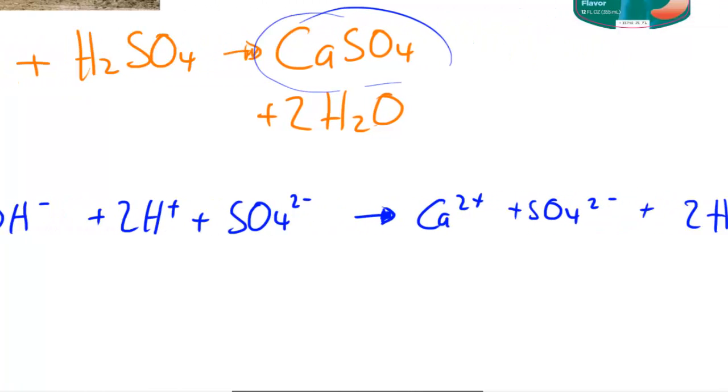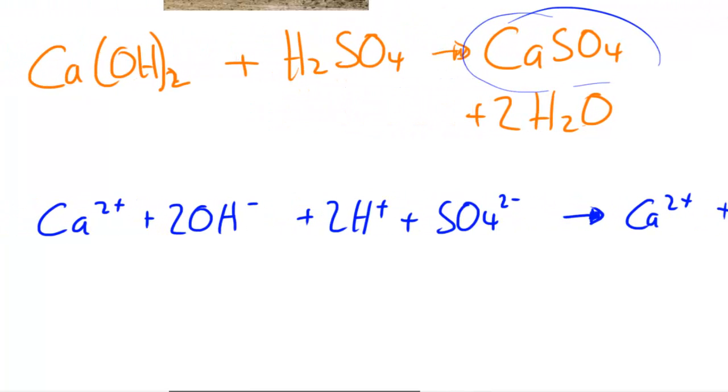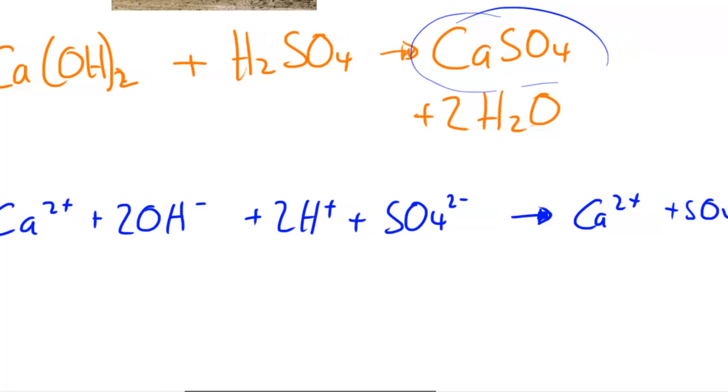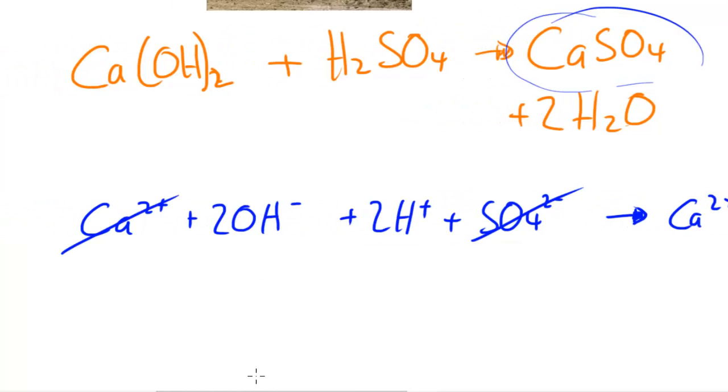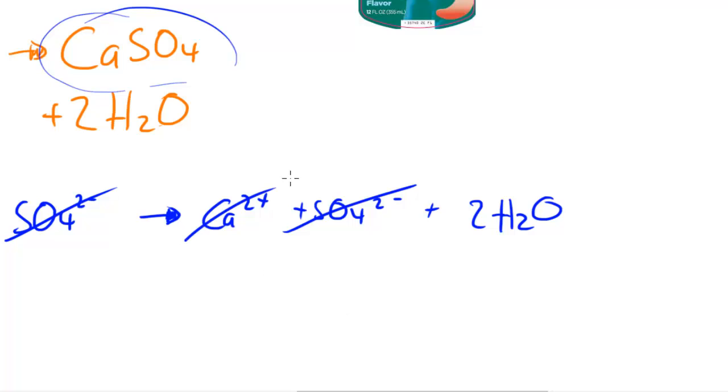So if I was to actually simplify this and cancel out the ions which are on both sides. So the ions which are on both sides, SO42- is on this side and that side so that's cancelled out. And now I can cancel out the calcium as well, so calcium is on that side and it's on this side so that cancels out.